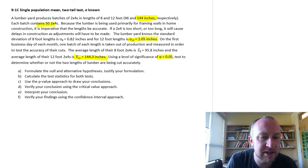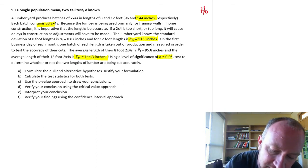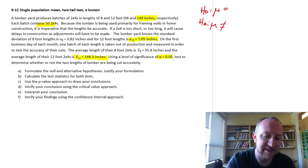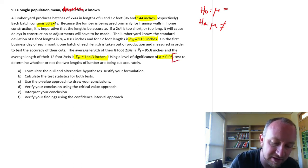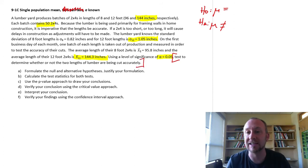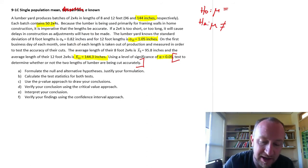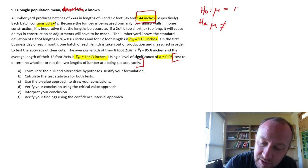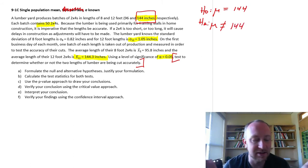First thing we need to do is develop our null and alternative hypotheses, H0 and HA. We're testing a single population mean and this is a two-tailed test. So it's equal or not equal. How do we know it's a two-tailed test other than the fact that it tells us right there? It says test to determine whether or not the lumber is being cut accurately. It doesn't say if it's being cut too long or too short. So is it on spec which here is 144 inches or not. The null hypothesis which always holds the equality is that it is equal to 144 or it is not equal to 144.